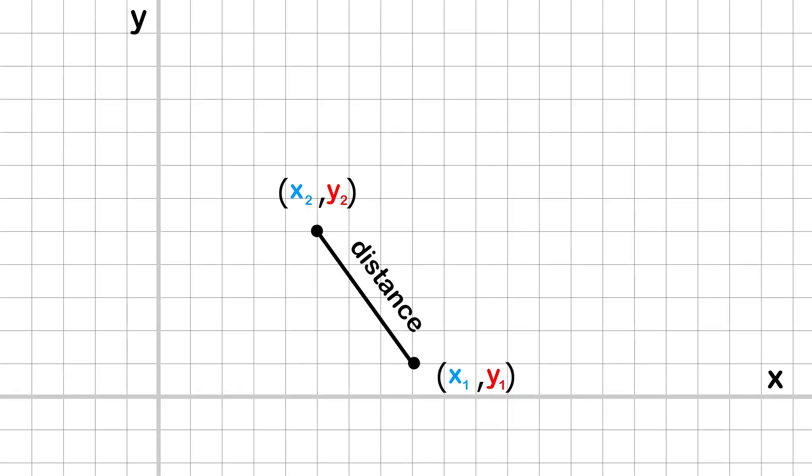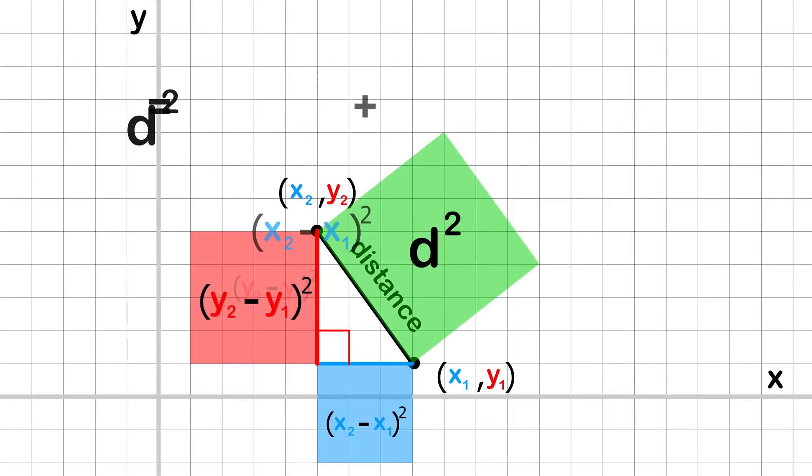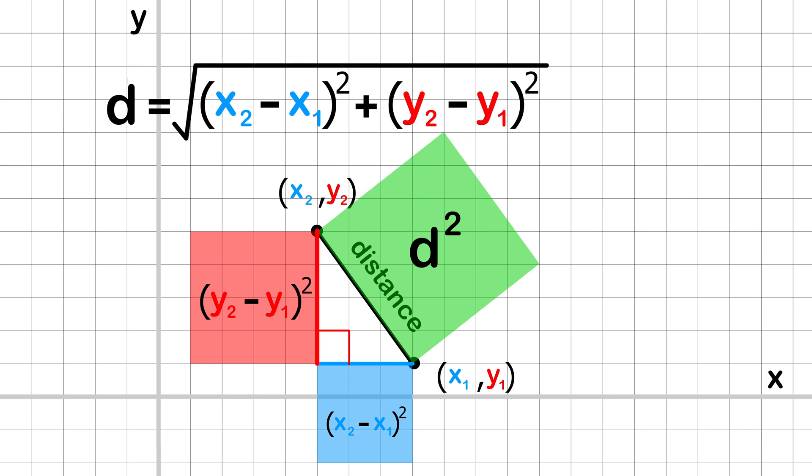Points are represented as coordinates x, y and the distance can be calculated using the distance formula. The distance formula is derived directly from the Pythagorean theorem.